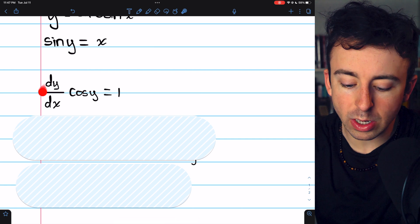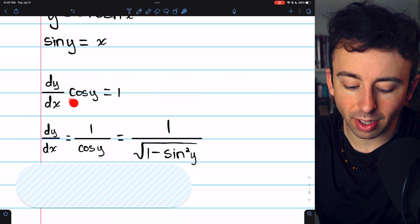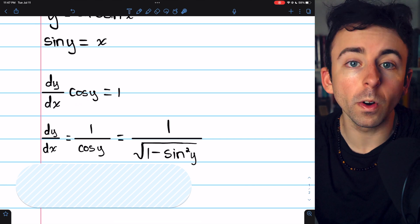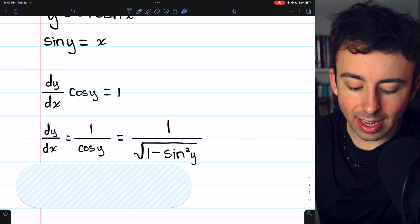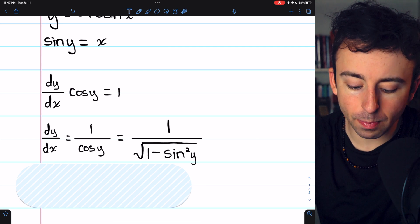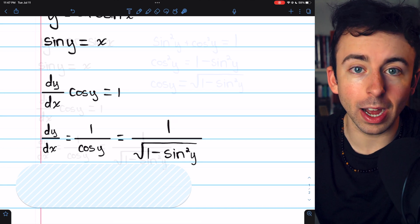Then, since we're looking for dy/dx, we'll divide both sides of this equation by cos(y) to solve for dy/dx. Thus, dy/dx is equal to 1 divided by cos(y), which is equal to this, and here's why.